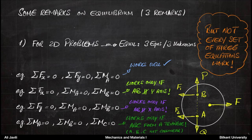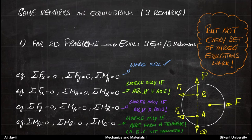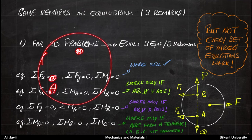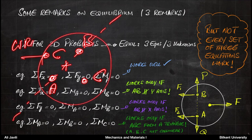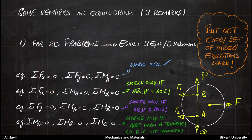Another case: if you use three moment equations — also three equations — they only work if A, B, C form a triangle. The three points with respect to which you write the balance of moment equations must form a triangle. So if you have points A and B, your point C cannot be along the line AB — that doesn't work. In other words, A, B, C cannot be collinear for this to work.